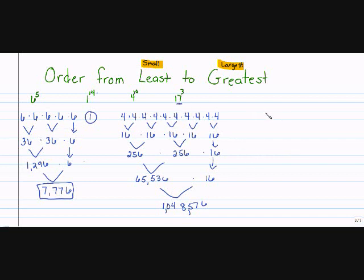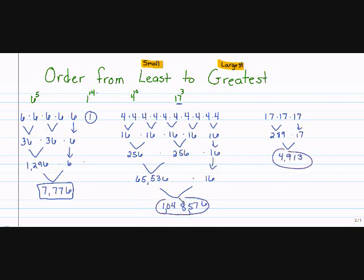We still have 17 to the third. My base is 17, and my exponent tells me how many times to multiply it. 17 times 17 is 289, bring down my 17, and 289 times 17 is 4,913. Now the numbers in standard form are what I put in order from least to greatest: first is 1 to the 14th (equals 1), then 17 to the 3rd (4,913), then 6 to the 5th (7,776), and the greatest is 4 to the 10th power.